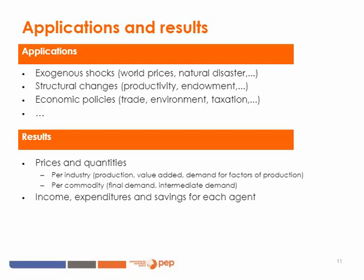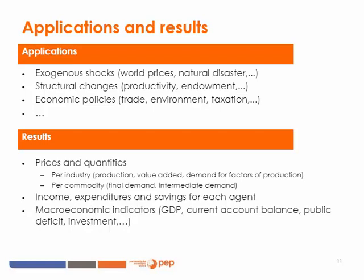It also gives results on prices and quantities per commodity — thinking about final demand, intermediate demand, demand for investment purposes and so on. The results also look at the impact of shocks on income, expenditures and savings for each agent: households, firms, and government. It also provides information on macroeconomic indicators such as GDP, current account balance, public deficit, investment, and so on. One must remember that fully understanding the result of a shock is probably the biggest challenge, and the bigger the model, the more complicated it gets to follow the transmission mechanism of a given shock.